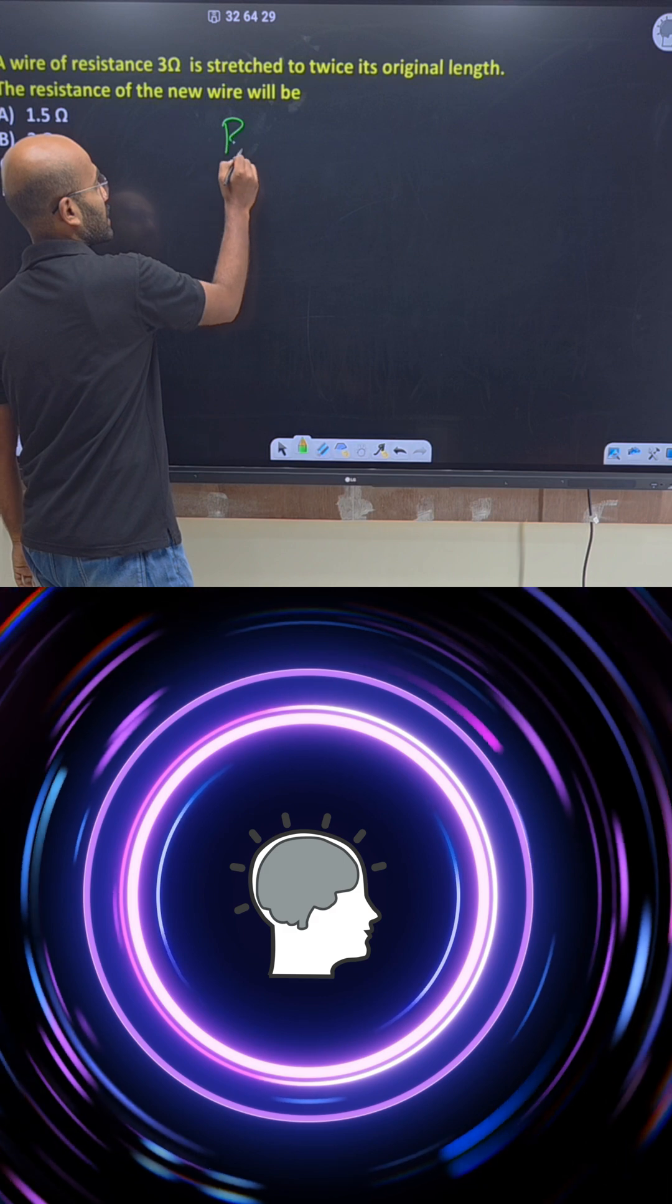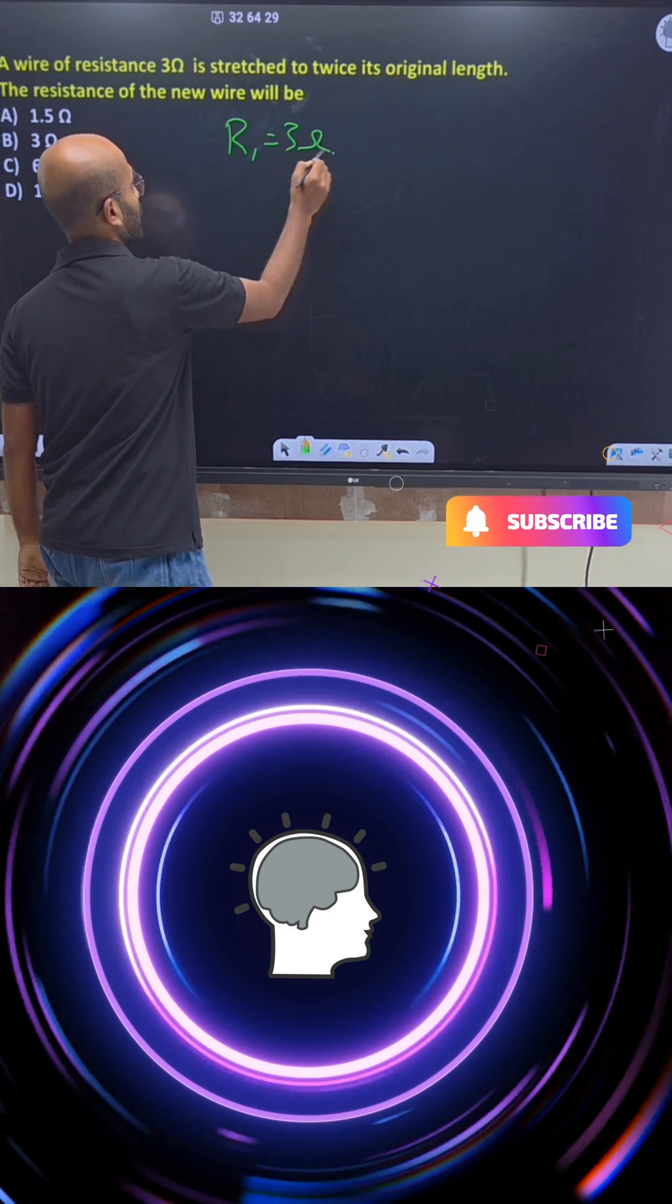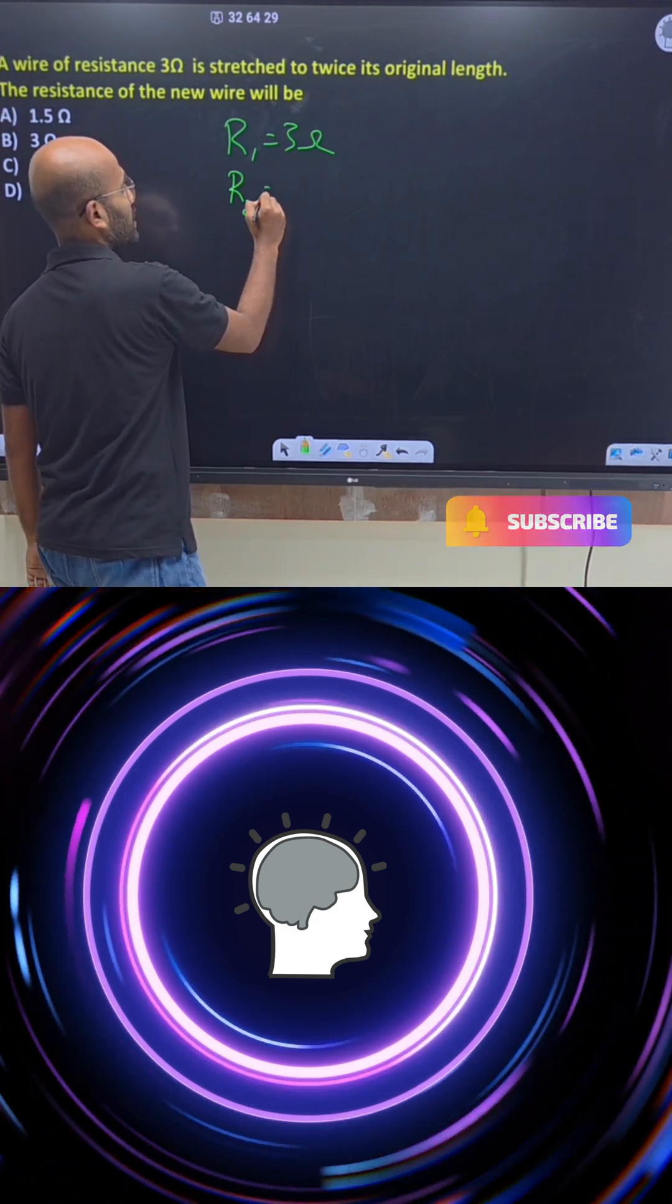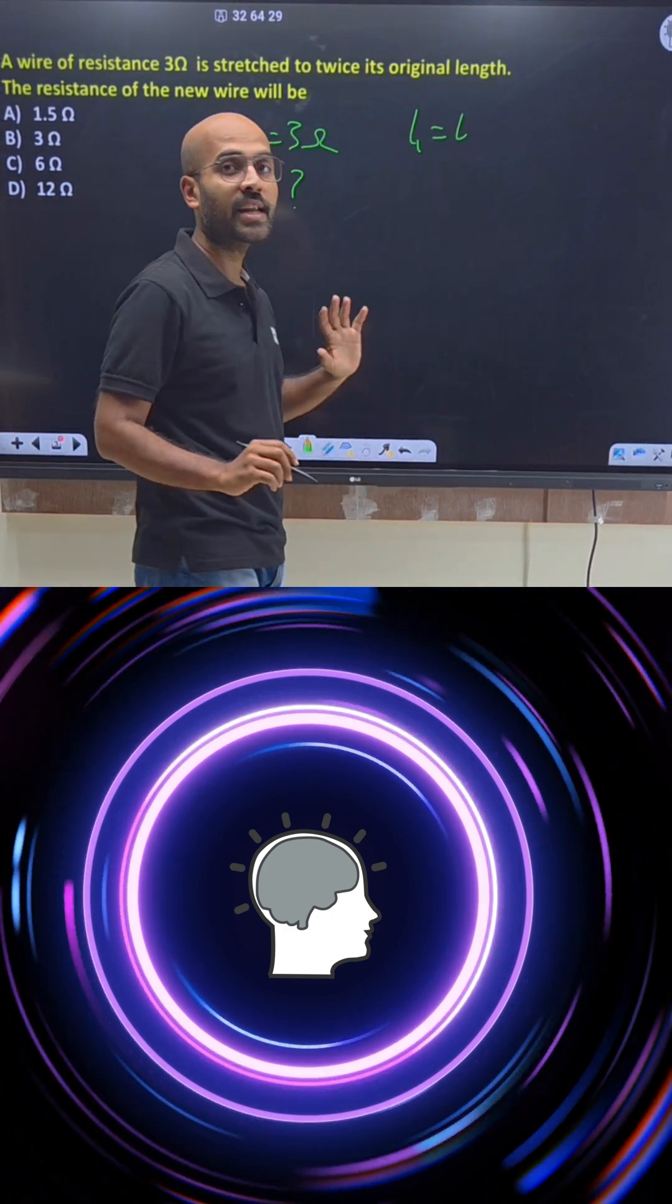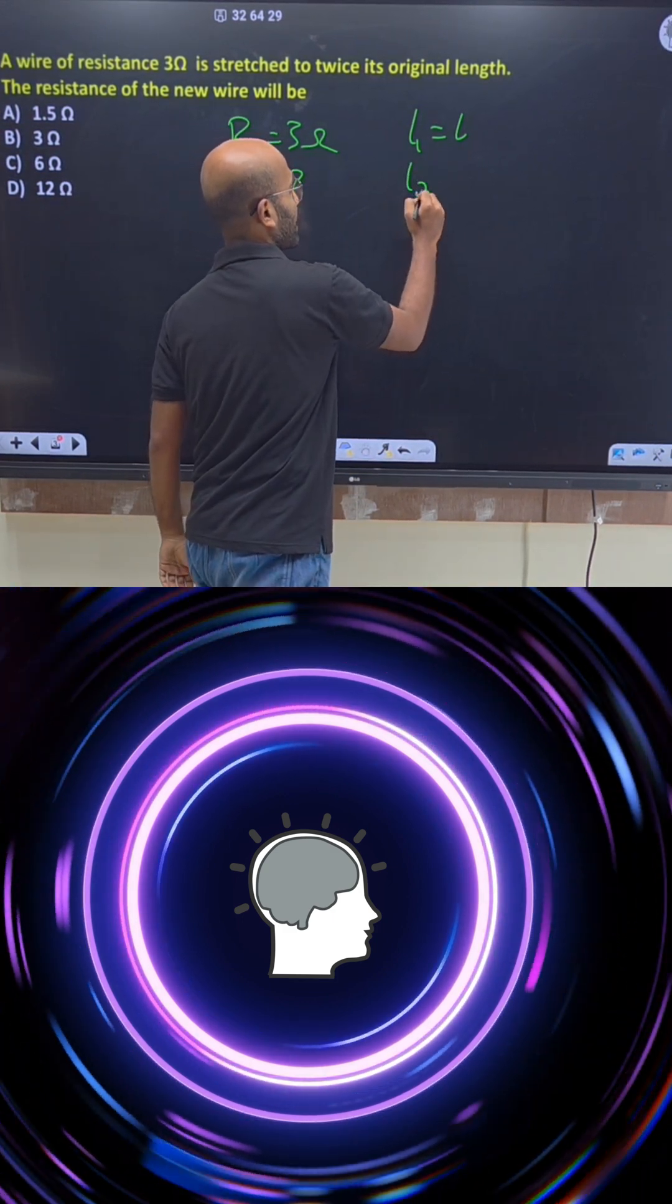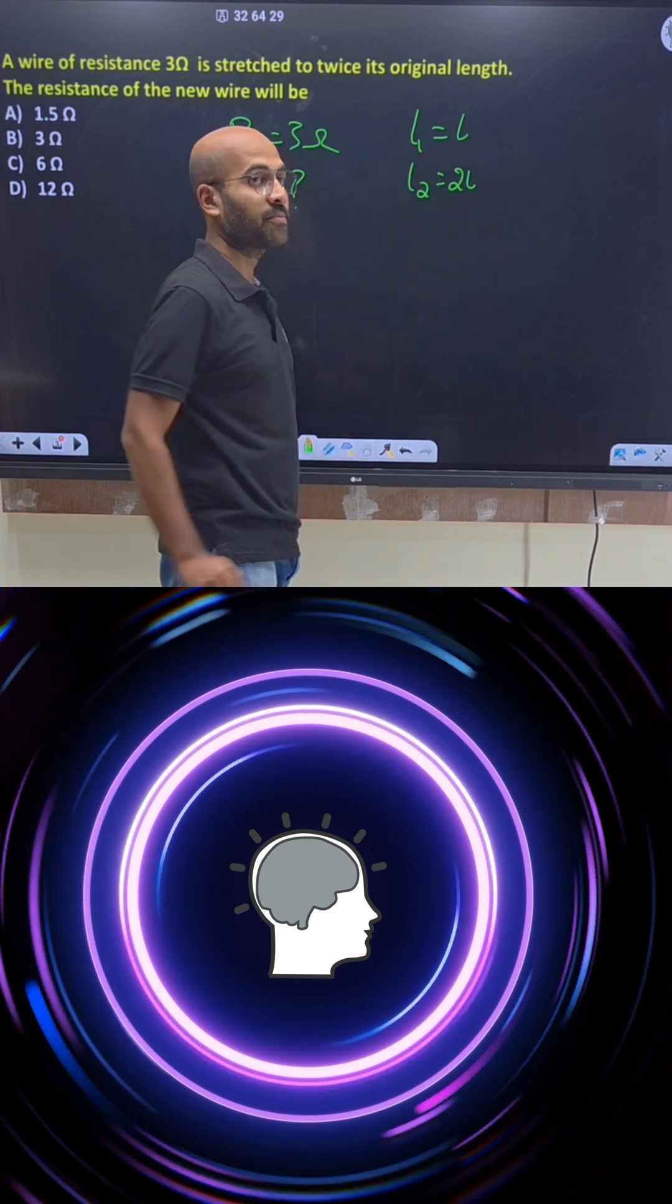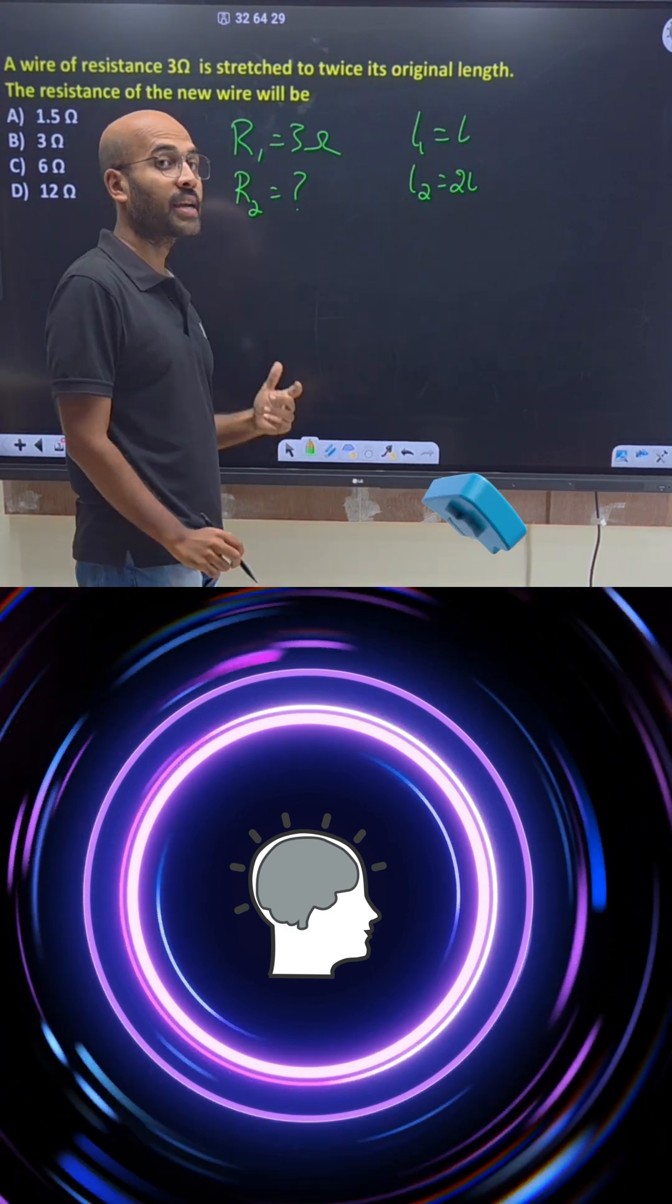So starting resistance is R1, 3 ohm. Next, the new resistance is... the starting length is this. So what is the new length? It is double. So new resistance is this. Shortcut.